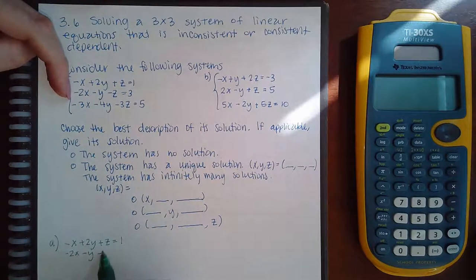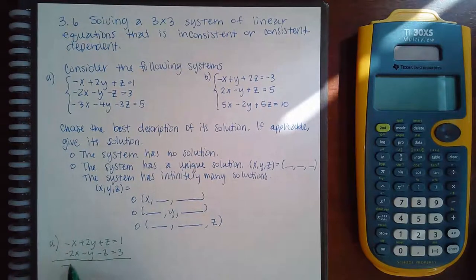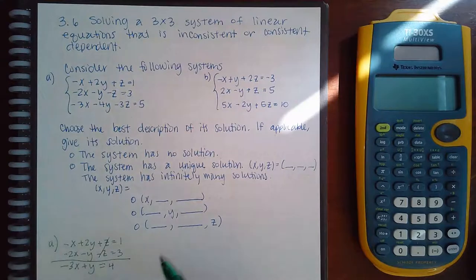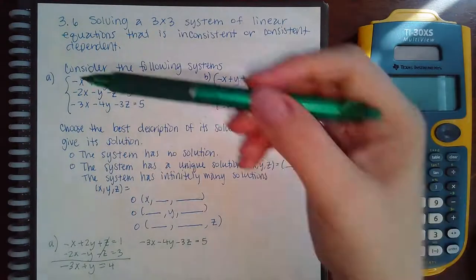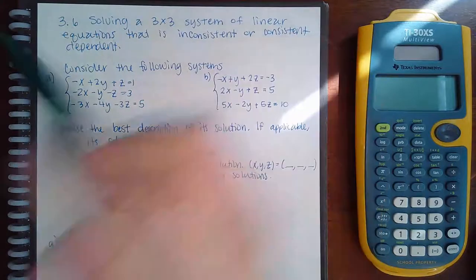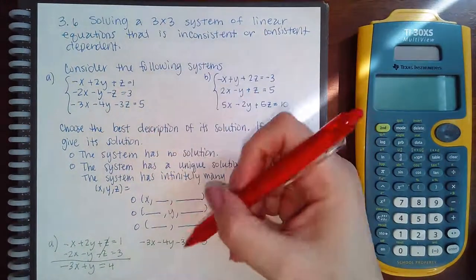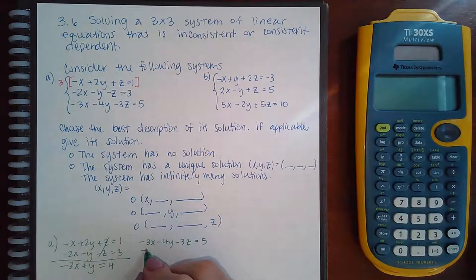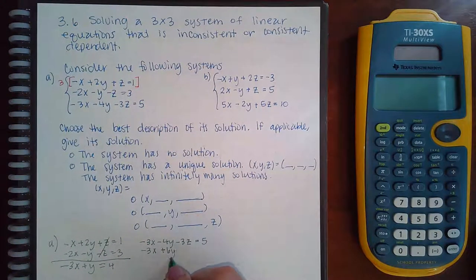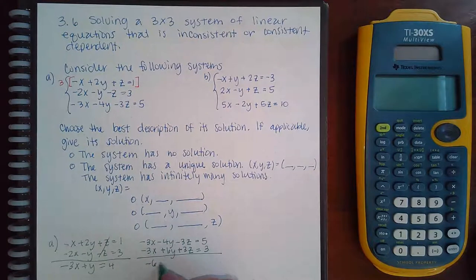Combining equations one and two gives me negative three x plus one y, and the z's are gone, equal to four. Then I take equation three: negative three x minus four y minus three z equals five. I need to take equation one again to eliminate that same z, and I'll multiply it by three. That gives me negative three x plus six y plus three z equal to positive three. Combining those, I get negative six x plus two y equal to eight.